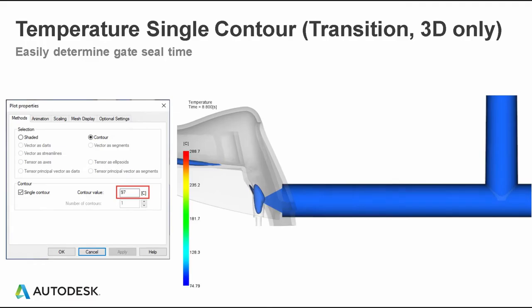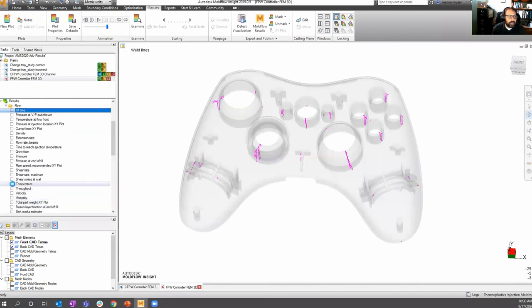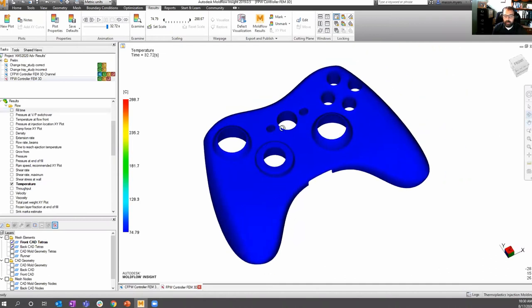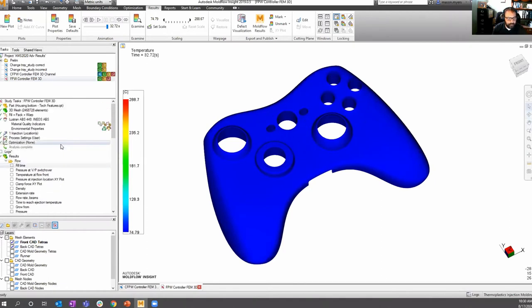Another 3D-specific plot is changing the temperature plot to be a single contour set to the transition temperature. This allows you to determine things like gate seal time, which can be used as an input for our pack time. Because once the gate is sealed, we're not packing any additional material into the part cavity.